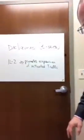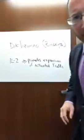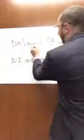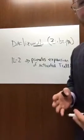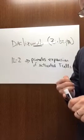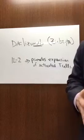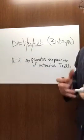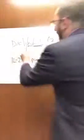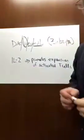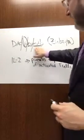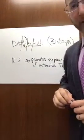Daclizumab is a monoclonal antibody and if we look at the word Daclizumab backwards it gives us insight into the way that the drug works. MAB means that this drug is a monoclonal antibody — there are other monoclonal antibodies in MS like Tysabri and like Lemtrada. ZU means that Daclizumab is humanized — it's got a lot of human content, they've taken out as much mouse as possible. And LI means that this drug was invented for an immune target. So Daclizumab is a monoclonal antibody that's humanized and invented for an immune target. The trade name is Zinbryta.